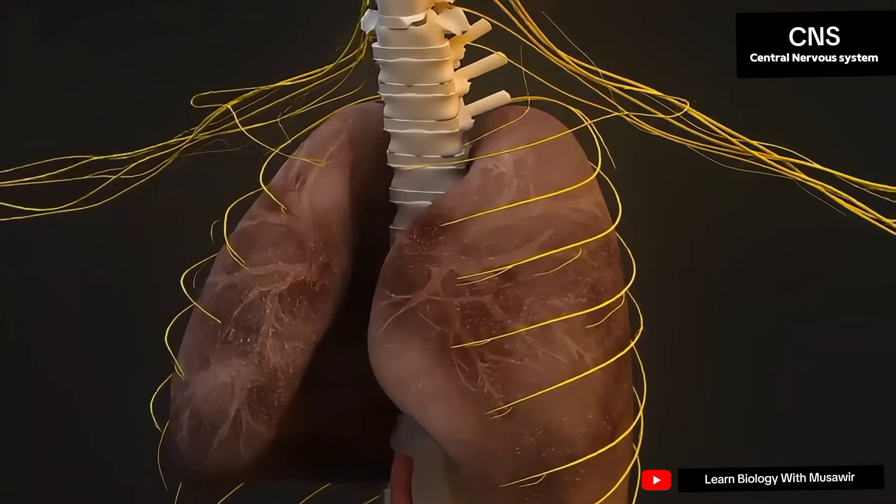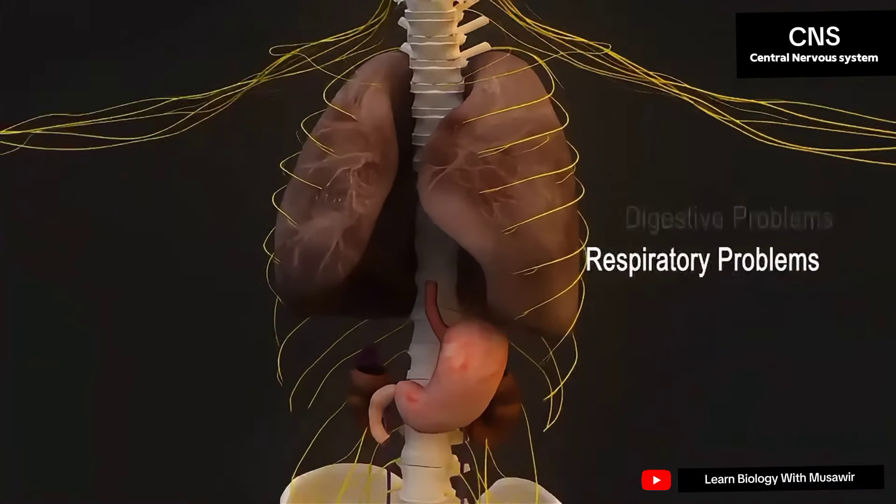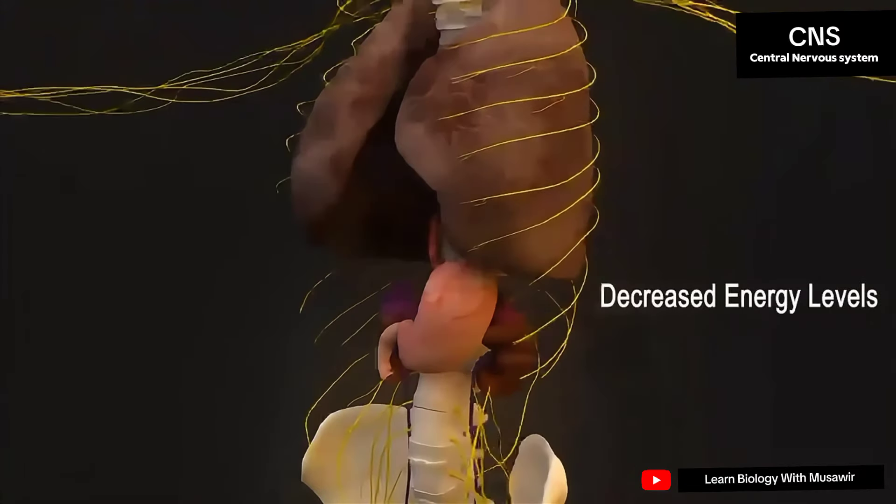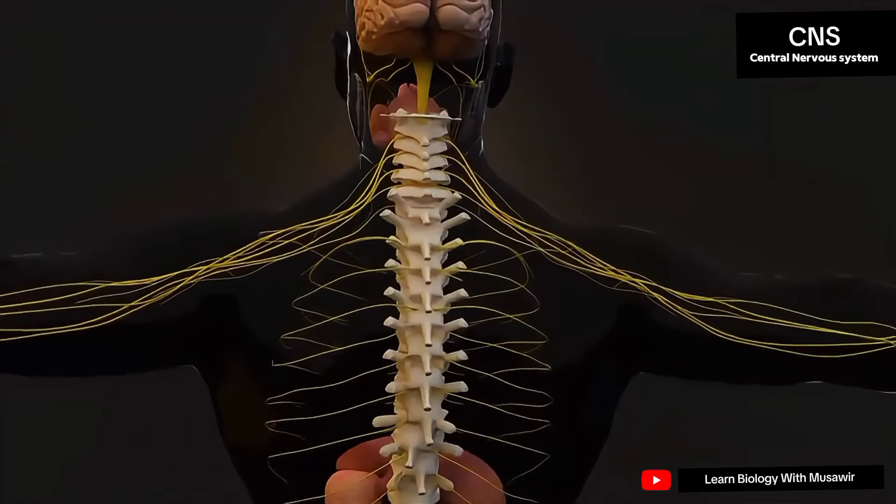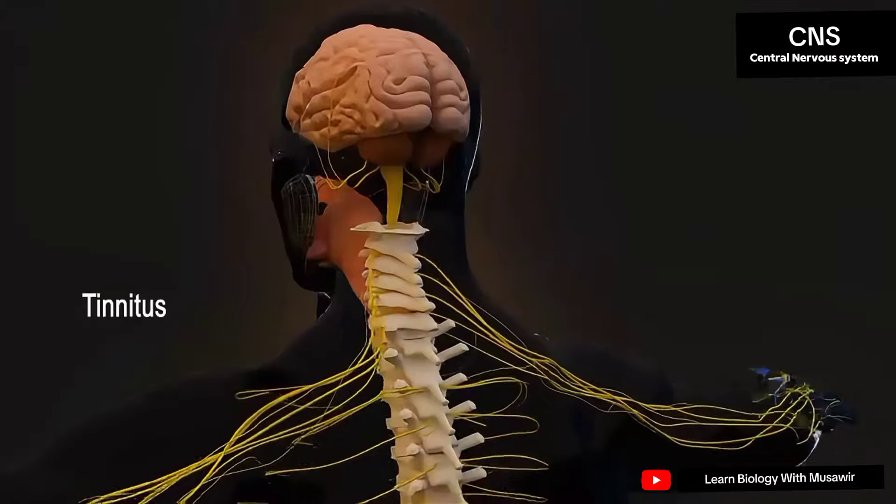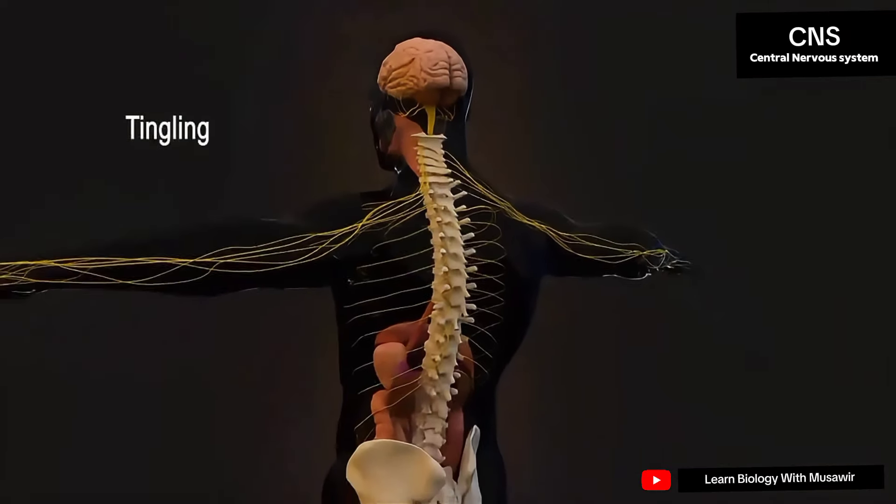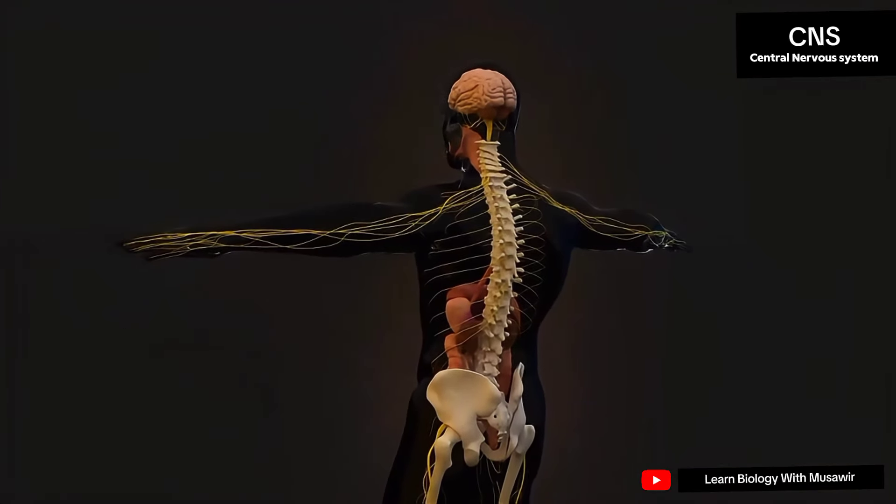A subluxation in your upper back can cause respiratory problems, digestive problems, and decreased energy levels. And subluxations in your neck can cause headaches, dizziness, tinnitus, carpal tunnel syndrome, numbness, tingling, and weakness to one or both of your arms.